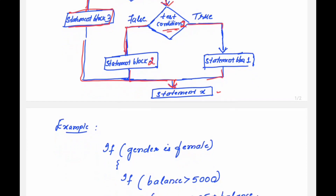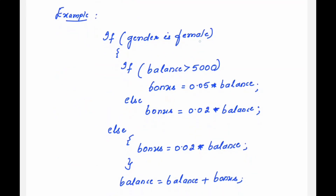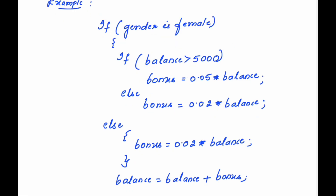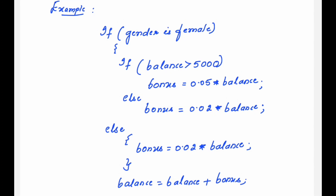This is the flow for nesting of if-else statements. Here is an example: a company plans to give a bonus to female employees. To give the bonus, they check the balance. If the balance is greater than 5,000, then 5% of the balance is given as bonus. If the female employee does not have a balance greater than 5,000, then 2% of the balance is given as bonus. For all other employees — the male employees — irrespective of their balance, a bonus of 2% of the balance is given.